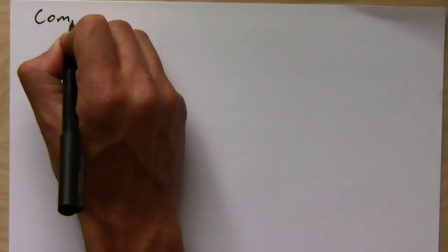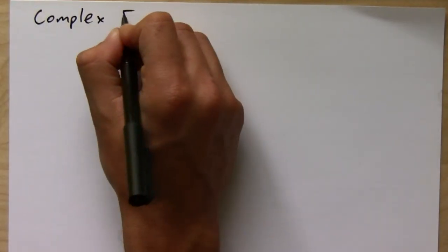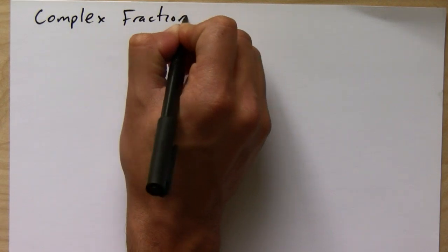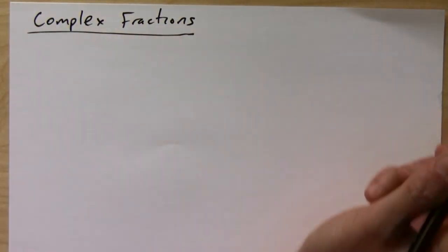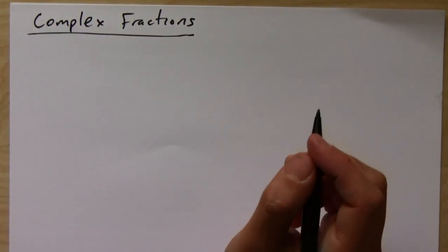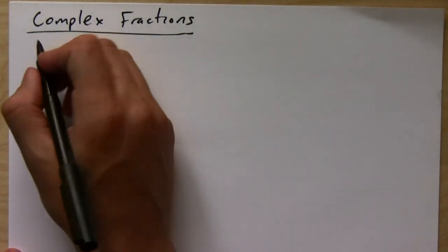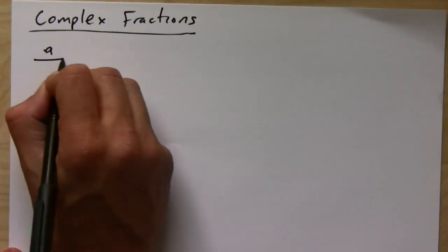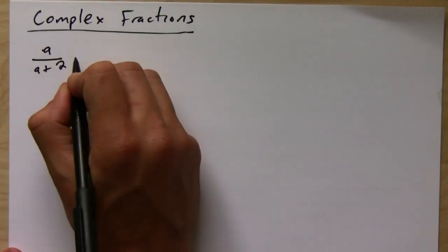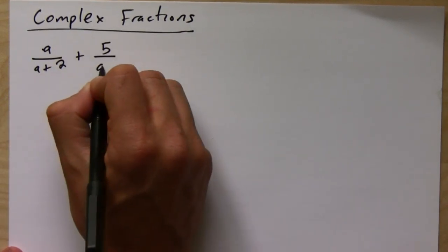Okay, so the next thing: complex fractions is really important. They come up in calculus as well a lot. So let's say we want to simplify something like a over (a plus 2) plus 5 over a, all over a over (2a plus 4) plus 1 over 3a.